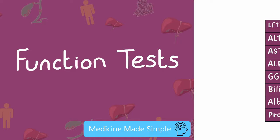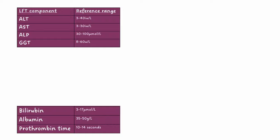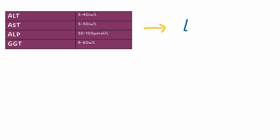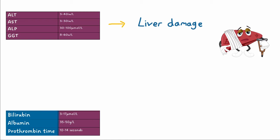These are the main components of the liver function test. High ALT, AST, ALP and GGT all reflect some form of damage to the liver. Whilst bilirubin, albumin and prothrombin time reflect the liver's ability to conjugate and synthesize protein.